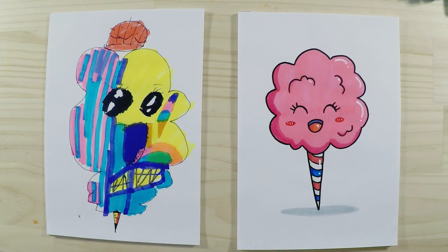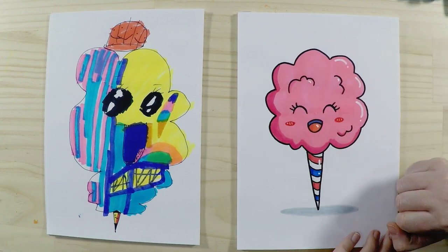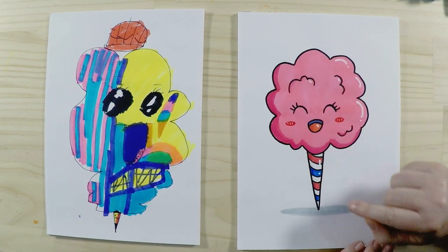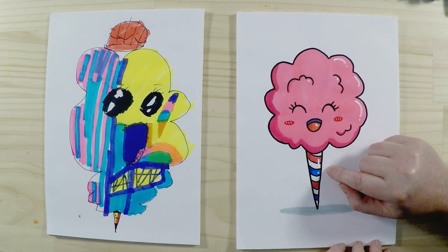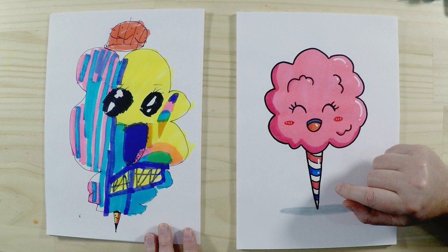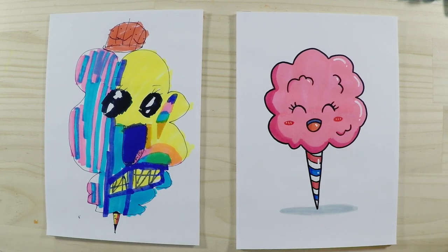And we're back! We finished coloring in our candy floss. I've made mine pink and I've put some highlights and other little details in there. I made the little stick—or the cone—with red, white, and blue stripes. And what have you done with yours? I put some extra little colors and I put ice cream on it.